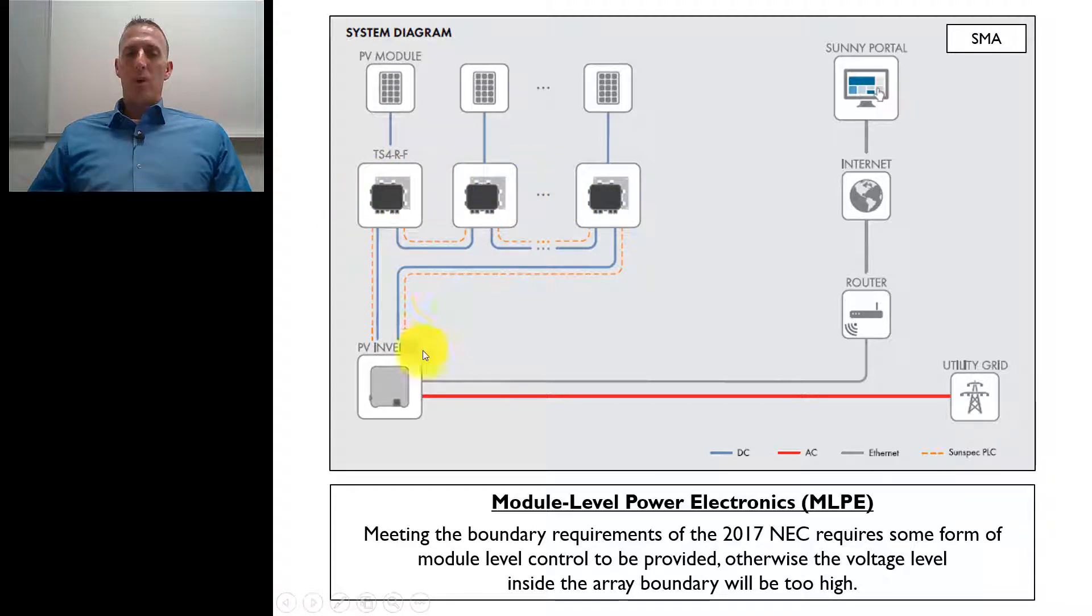And when rapid shutdown is initiated, it's going to basically break down this array and reduce those voltages to specific levels that within the array boundary would be less than or equal to 80 volts. And then outside the array boundary, this is where we would be at 30 volts or less within 30 seconds.